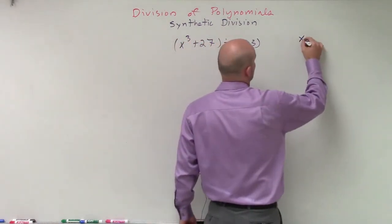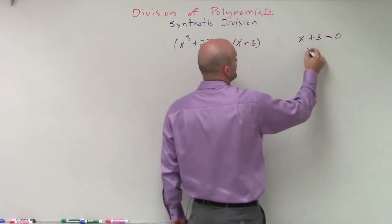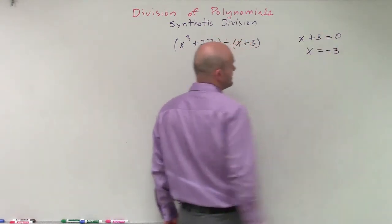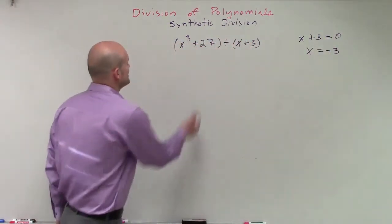So therefore, we can just take it and say x plus 3 equals 0. And then say, all right, well, that means x is going to equal negative 3 as I solve for it. So that's going to be on my outside.